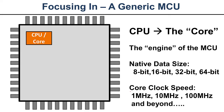The second parameter that engineers tend to look at is the core clock speed. The CPU core is a piece of synchronous logic — it needs a clock. In microcontrollers, we can have everything from low-power 1 MHz or 10 MHz up to 100 MHz and beyond. You typically don't see microcontrollers in the gigahertz realm — that's for application processors like the high-end ARM chips in your phone or a desktop microprocessor. Microcontrollers tend to range from a few megahertz up to several hundred megahertz at the high end.